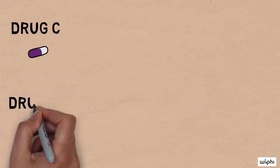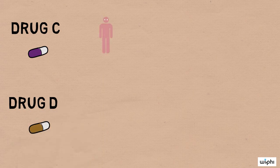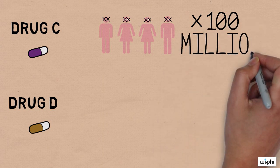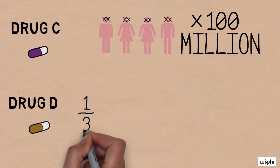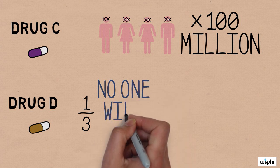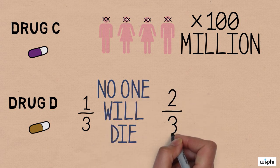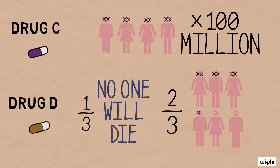But now imagine that your team is faced with a slightly different choice. This time, it's between drug C and D. If you choose drug C, 400 million infected people will die for sure. If you choose drug D, there's a one-third chance that no one infected will die, and a two-thirds chance that 600 million infected people will die. Which drug do you choose in this case?